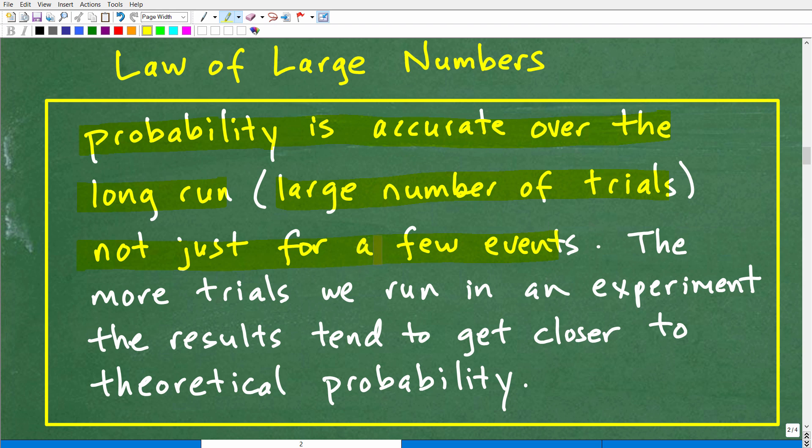What we're talking about here is this. If you just run a few experiments, like if we flip our coin a couple few times, six times, and five out of six times it comes up tails, that's not really good in terms of its accuracy. So here's the deal. The more trials we run in an experiment, the results tend to get closer to theoretical probability.